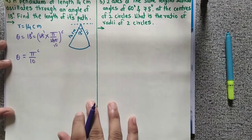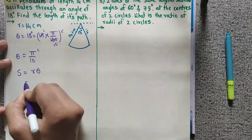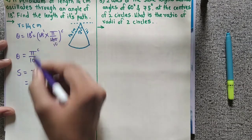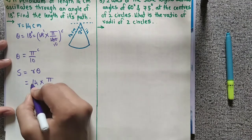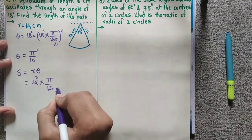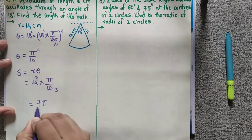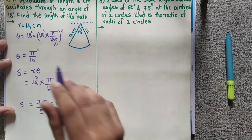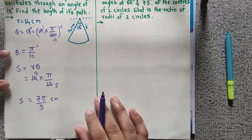Now we put this in the formula. Formula is S equal to r theta. R is 14 and theta is pi by 10. Two sevens are 14, two fives are 10. The answer is seven pi upon five cm. That is the length of the path of the pendulum.